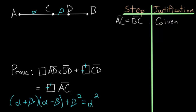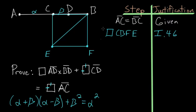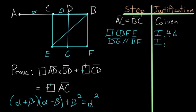Let's start this proof by drawing a square on the line BC, which we call square CBFE. We can construct this square by Book 1 Proposition 46. Let's also connect points B and E by Postulate 1. At this point we'll create some parallel lines — starting with a line through point D parallel to line BF, labeling the intersection point G, so that DG is parallel to BF. This comes from Book 1 Proposition 31.